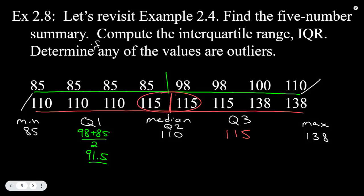Those values give us the five-number summary. To find the interquartile range: IQR = Q3 − Q1 = 115 − 91.5 = 23.5.